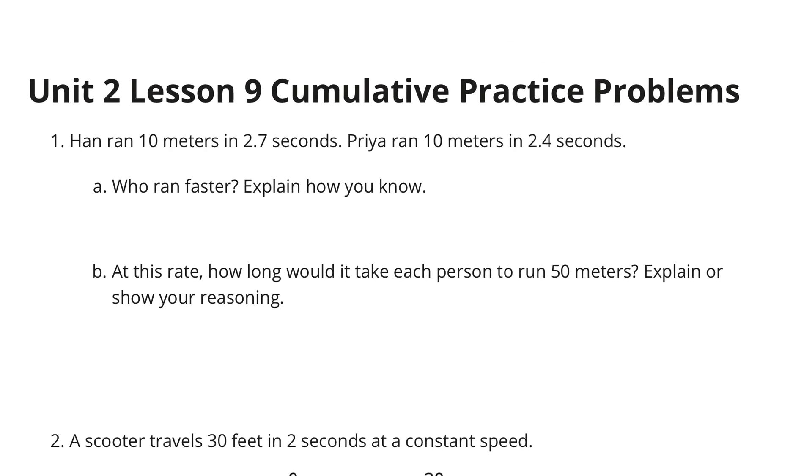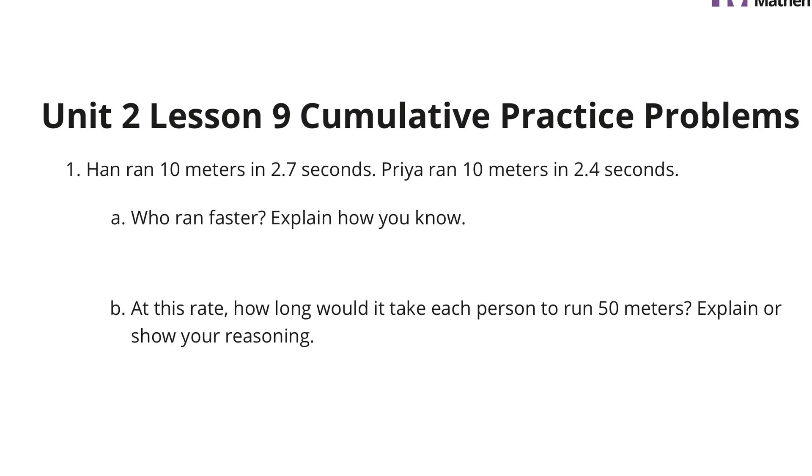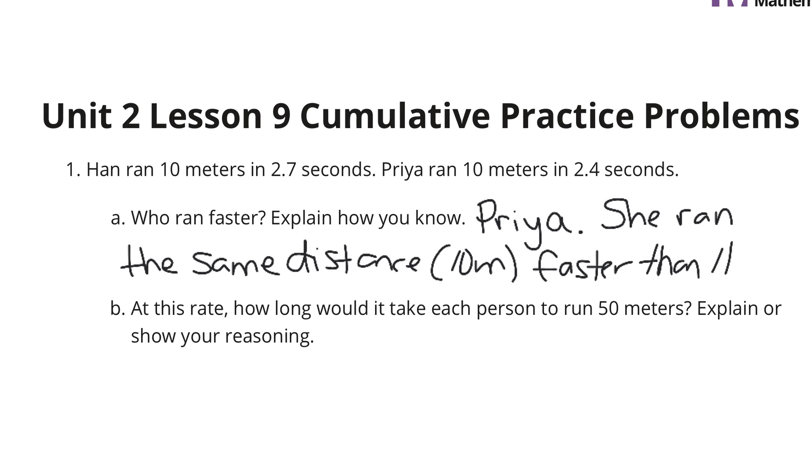If we look at question 1, Han ran 10 meters in 2.7 seconds. Priya ran 10 meters in 2.4 seconds. Who ran faster and explain how you know? Well, our solution to this is Priya. How we know: she ran the same distance, which was 10 meters, faster than Han. She ran it in 2.4 seconds, Han ran it in 2.7 seconds, so she was 3 tenths of a second faster than Han.